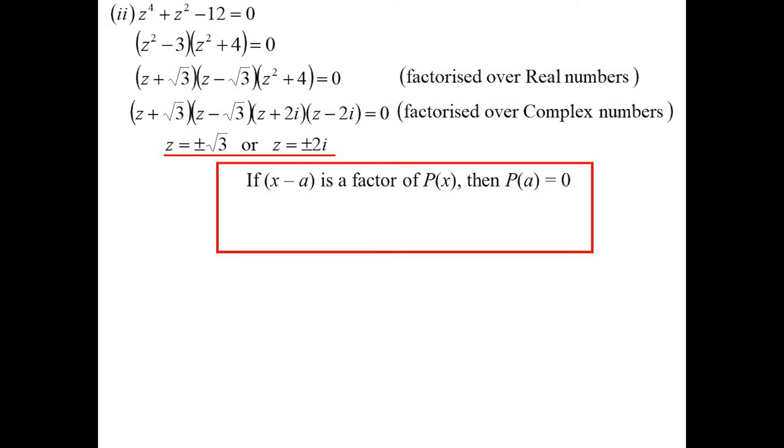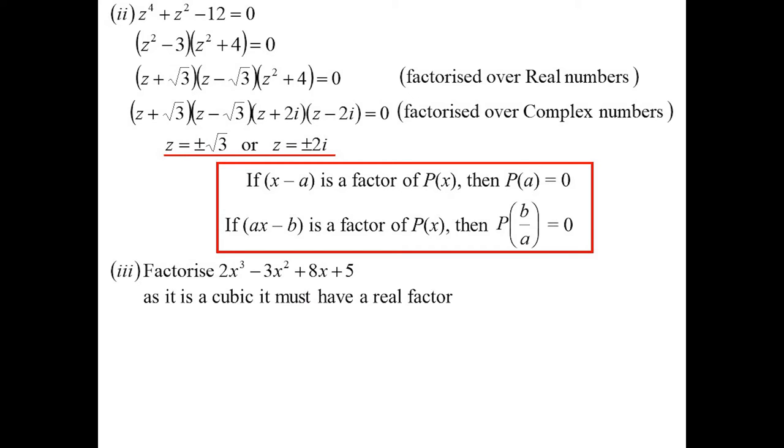Factor theorem. Reminder, we know that if x minus a is a factor, then polynomial a will equal 0. So that allows us to find factors. If it's ax minus b, then we would substitute in b over a. So b divided by whatever the coefficient of x is. So let's factorise this one. It's a cubic. So I know there must exist a real one in there somewhere. If the constant's 5, then the first thing I'm going to be trying is factors of 5.